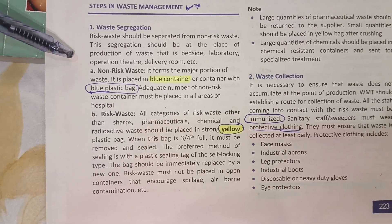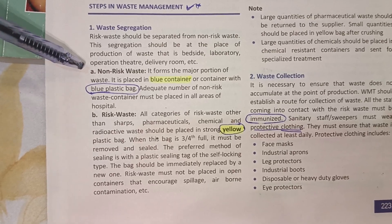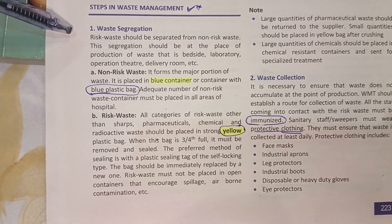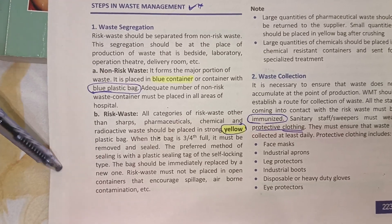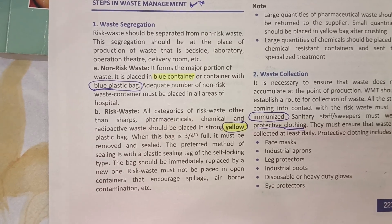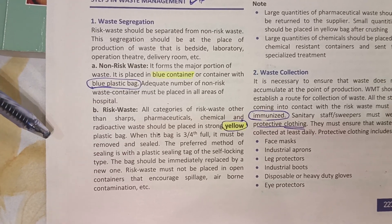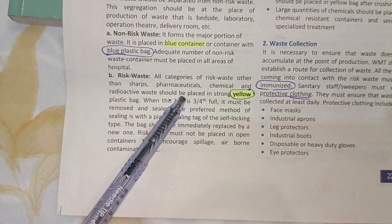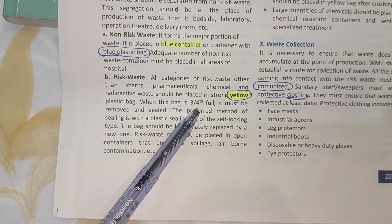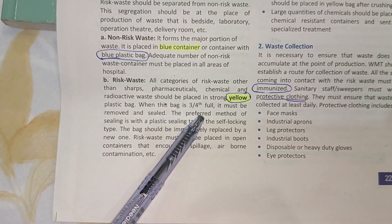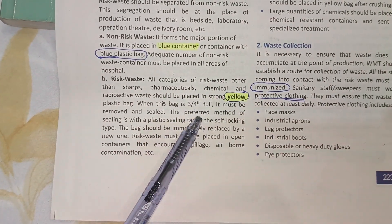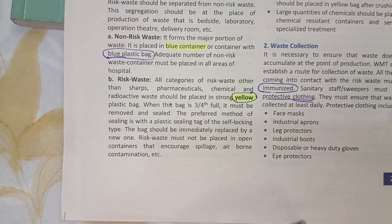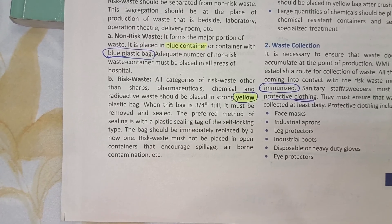A blue container or blue plastic bag is used for non-risk waste. It must be tear-resistant and strong. For risk waste, a yellow bag or trolley is used, which should be two-thirds filled before disposal. The yellow bag must be leak-proof.